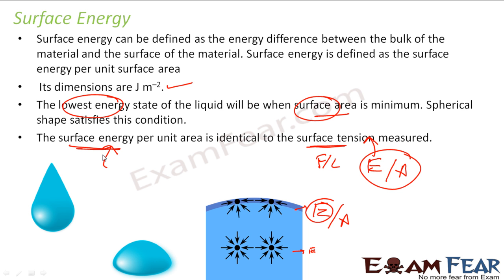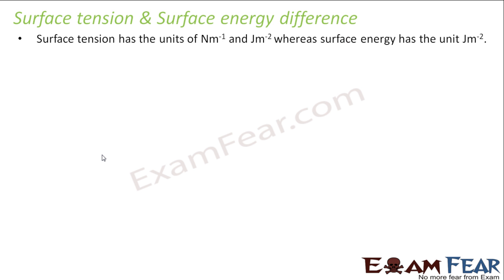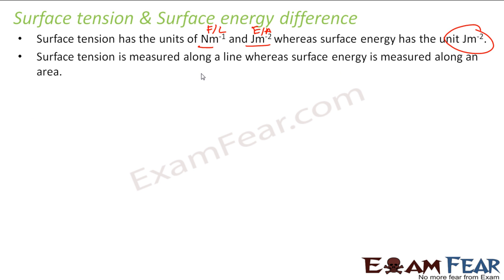That is why surface energy and surface tension are considered somewhat identical. Now let's see the difference between them. Surface tension has two units: Newton per meter when it is force per length, or joule per meter square when it is energy per area. Surface energy has only one unit — joule per meter square. Surface tension is measured along a line, whereas surface energy is measured along an area.